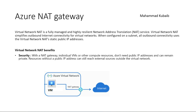Virtual network NAT benefits security. With the NAT Gateway, individual VMs or other compute resources don't require a public IP address and can remain private. Resources without a public IP address can still reach external sources outside the virtual network. So using NAT Gateway, even though you are using a private IP address, you can still reach the internet — and it is purely an outbound connection.